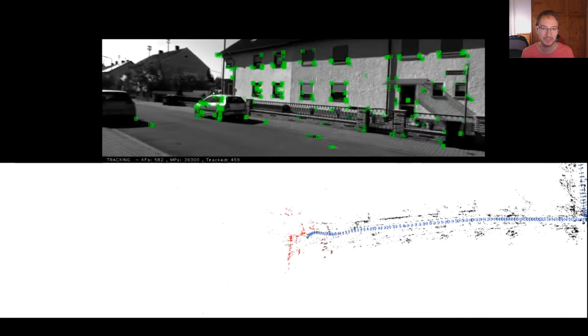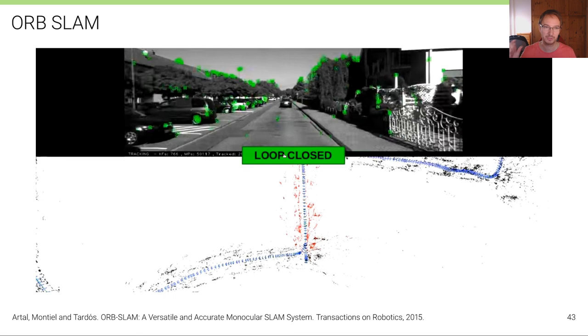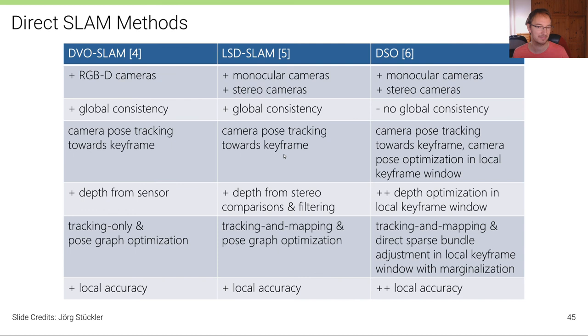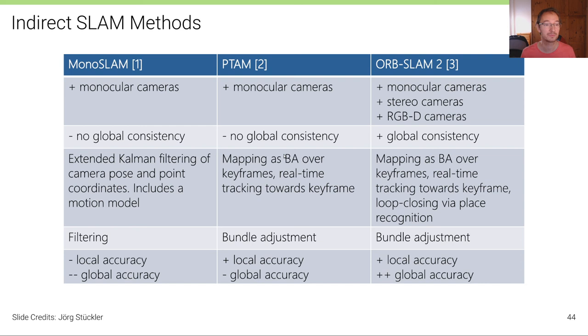So here on the last two slides, these are from Jörg Stückler's slides. I just wanted to illustrate to you that there's a whole variety of indirect SLAM efforts and also direct SLAM efforts. I'm not gonna go through these tables in detail but just to show you some references. And these differ in the type that some of them are online, some of them are using a bundle adjustment, and some use monocular cameras, some use stereo, RGB-D, etc.